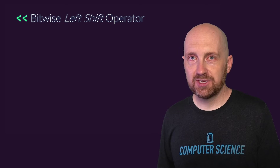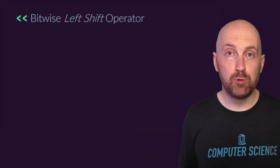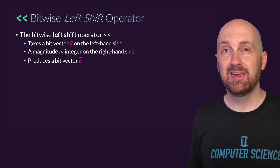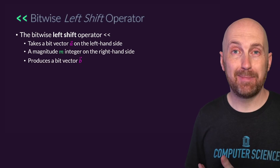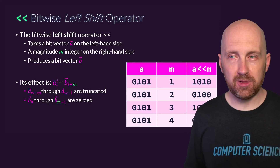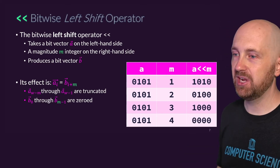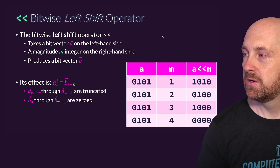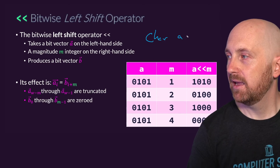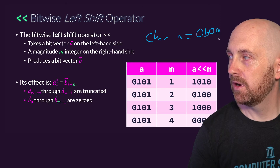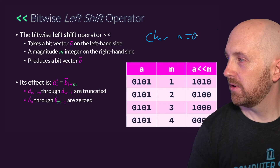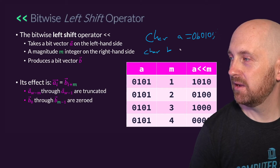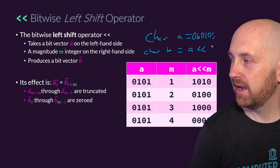The shift left operation takes all bits and moves them to the left. With this operator, you specify the bit pattern to be shifted as well as how many places you want to shift — that's a magnitude M. For example, if we had a character A storing binary pattern 0b0101, and assigned character B as A shifted left by one position, each bit moves one position to the left.